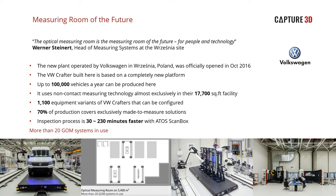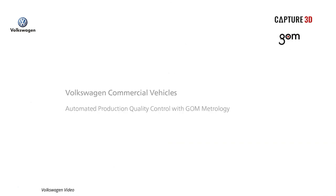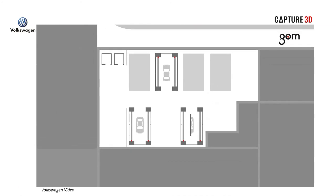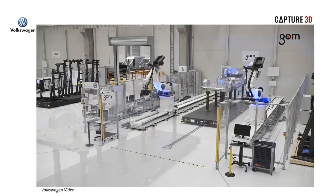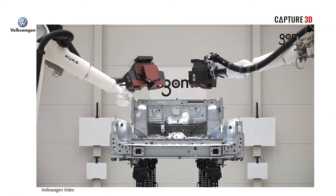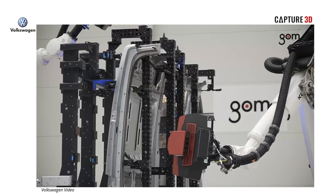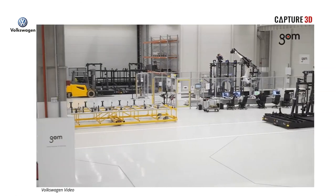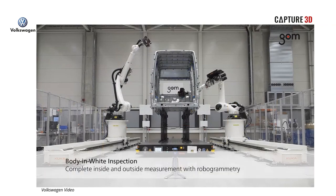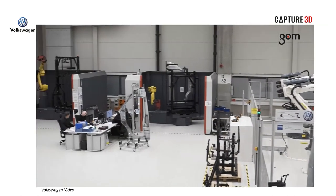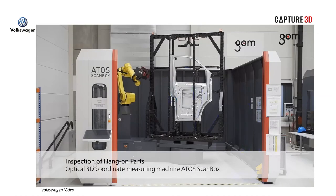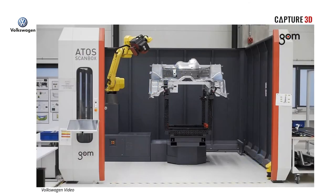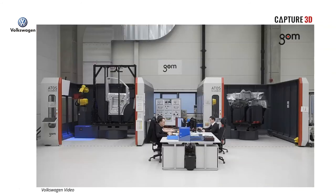Tying it all together — semi-automated solutions, custom project cells, and standard off-the-shelf systems. A great example is Volkswagen, a key GOM partner, who let us into their measuring room of the future. In this room alone there are 20 different GOM systems — a great example of standardized cells working alongside large project cells and manual systems. For anything larger than a body in white, such as an aircraft barrel or wing, we have the capability to come up with a solution. Two 6130s — standard off-the-shelf solutions — work alongside larger custom project cells, showing the variation possible even within a standardized solution.